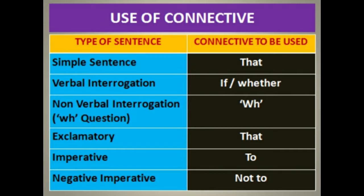Use of connective: there are several types of sentences in direct speech. If the given sentence is a simple sentence, use 'that' as the connective. For a verbal question, use 'if' or 'whether'. For non-verbal interrogation, use the given WH word. For an exclamatory sentence, use 'that'. For an imperative sentence, use 'to'. And for a negative imperative sentence, use 'not to' as the connective.